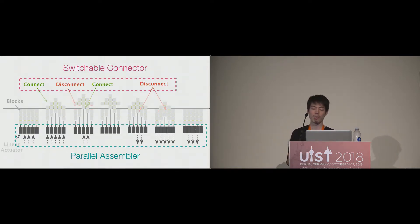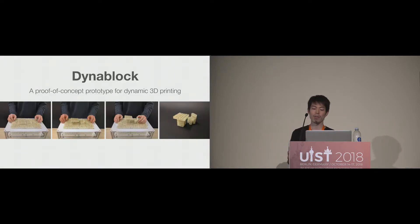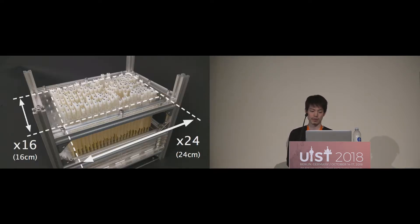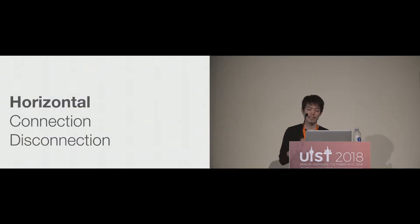By combining these key design components, we propose this design architecture for instant and reconstructable shape formation. To demonstrate the idea, we developed DynaBlock, a proof-of-concept prototype for dynamic 3D printing. DynaBlock forms three-dimensional shapes in seconds by assembling 3,000 small blocks. For the parallel assembler, we use a 24-by-16 pin-based shape display, which can push the blocks up to create three-dimensional shapes.